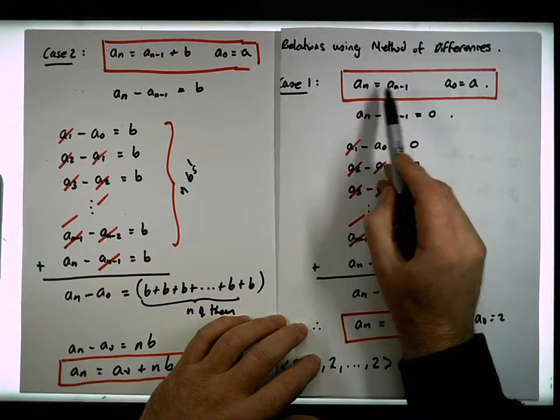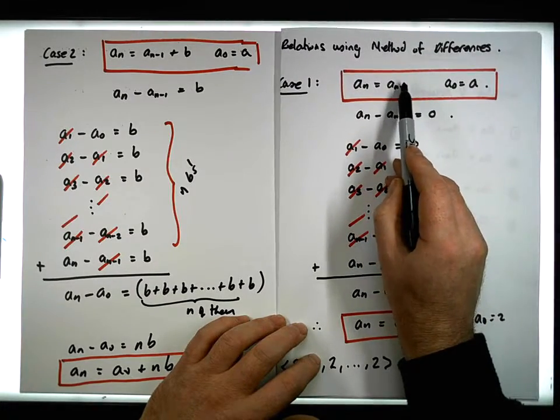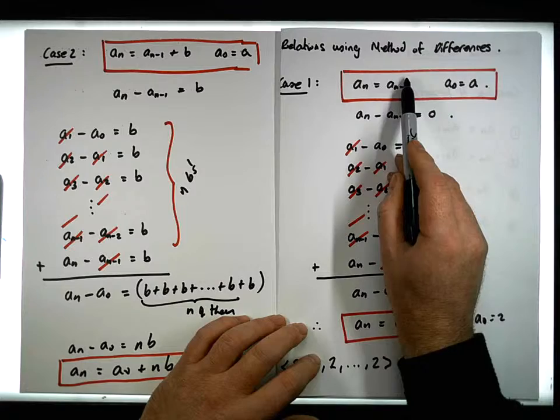They're homogeneous because all of the terms are to the same power. There's only one of them, which is to the power of one.